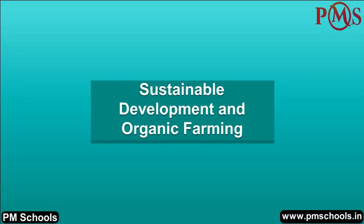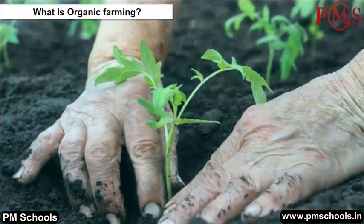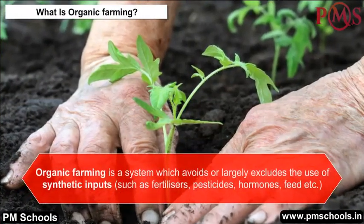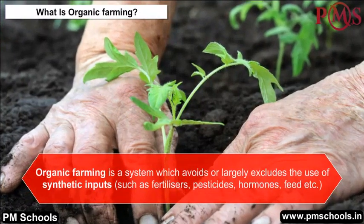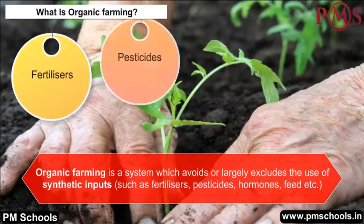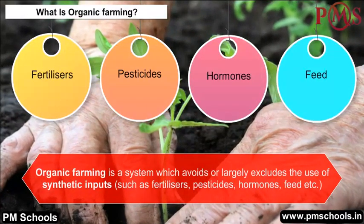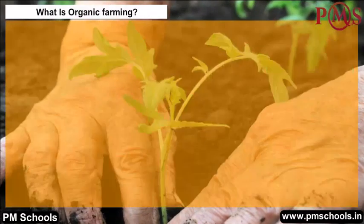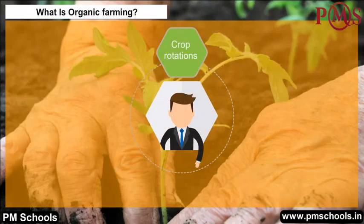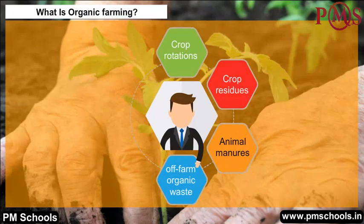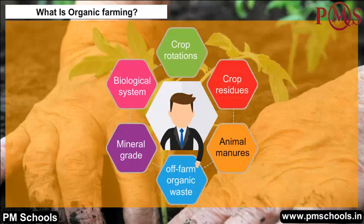Sustainable Development and Organic Farming: Organic farming is a system which avoids or largely excludes the use of synthetic inputs such as fertilizers, pesticides, hormones, and feed additives. To the maximum extent feasible, it relies upon crop rotations, crop residues, animal manures, off-farm organic waste, mineral-grade rock additives, and biological systems of nutrient mobilization and plant protection.